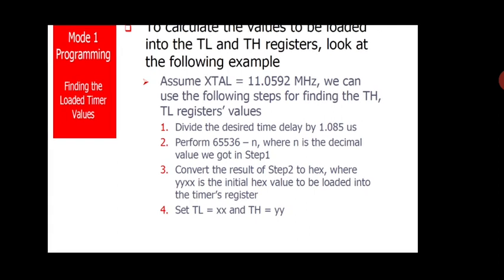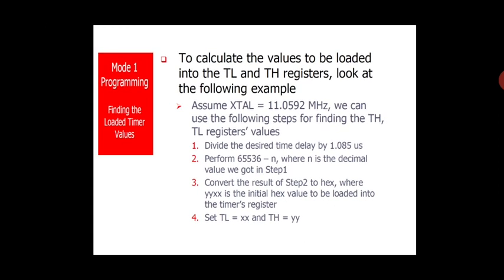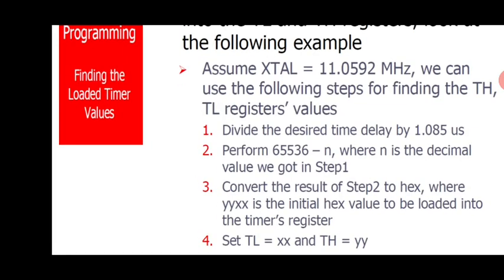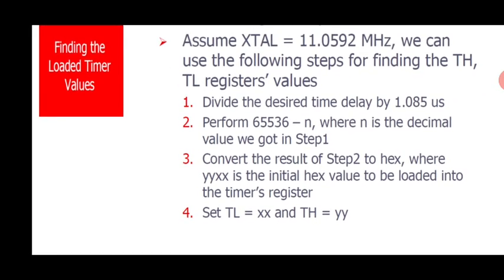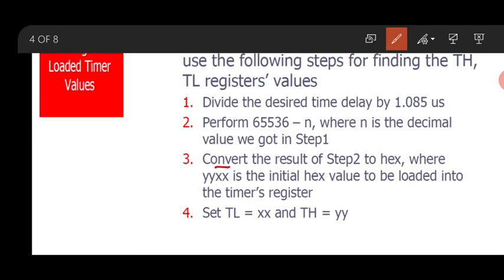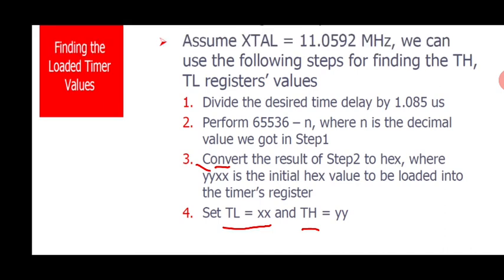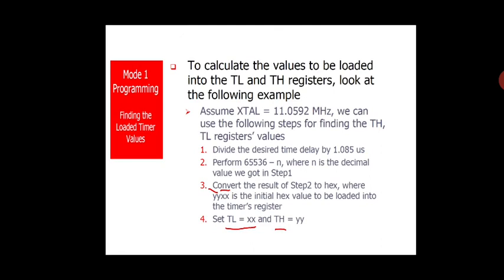Step 3: Convert the result of Step 2 to hexadecimal — you get a value YYXX in hex. Step 4: Load XX (the lower byte) into TLx and YY (the higher byte) into THx. This is the standard procedure for calculating timer load values for any desired delay.